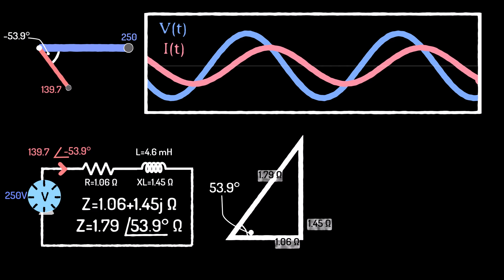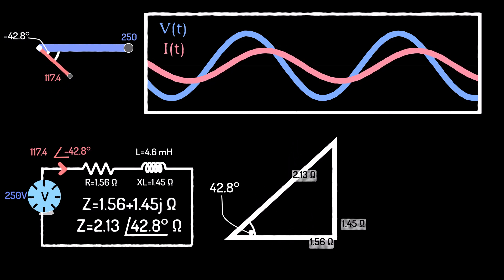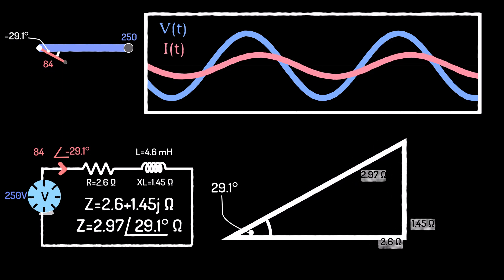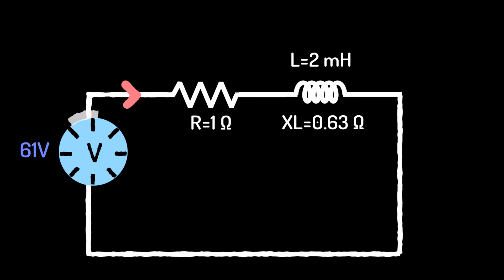In fact, being in phasor form hugely simplifies the calculation of Ohm's law, because it's simply the division of a phasor, which is the voltage, by a complex constant.